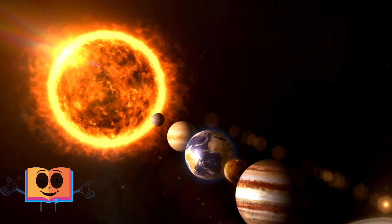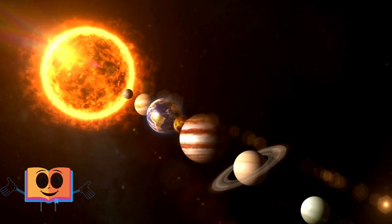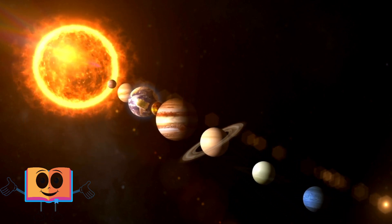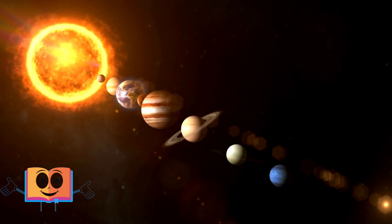They orbit, or revolve around, the Sun in specific paths called orbits. Earth takes about 365 days to complete one orbit.